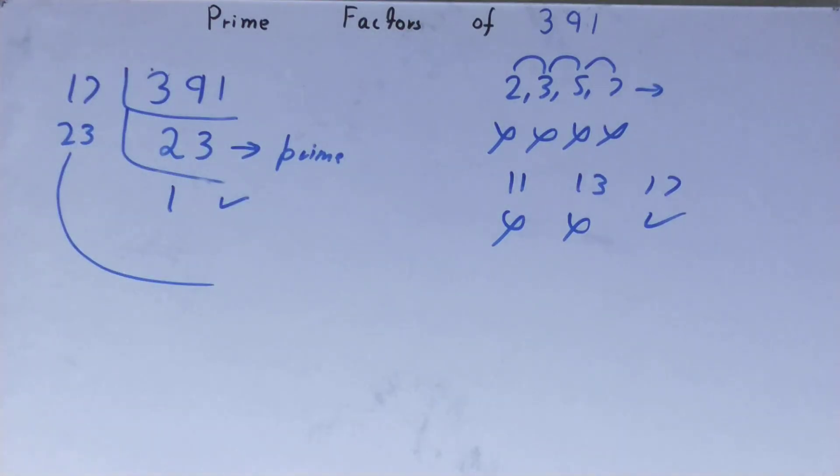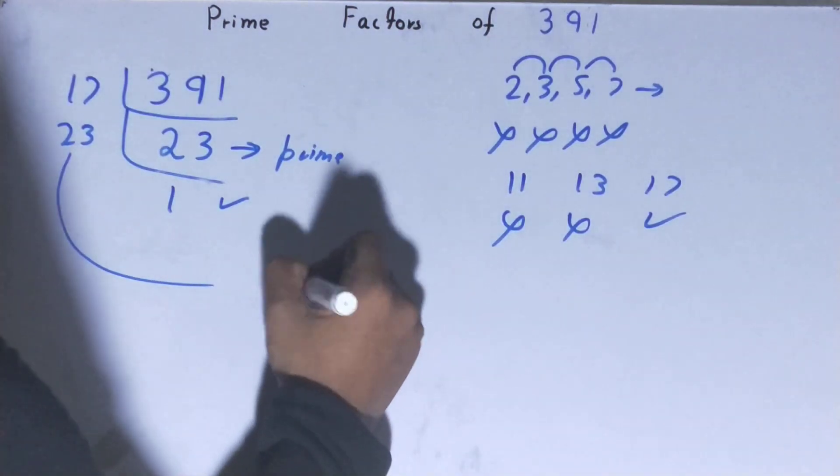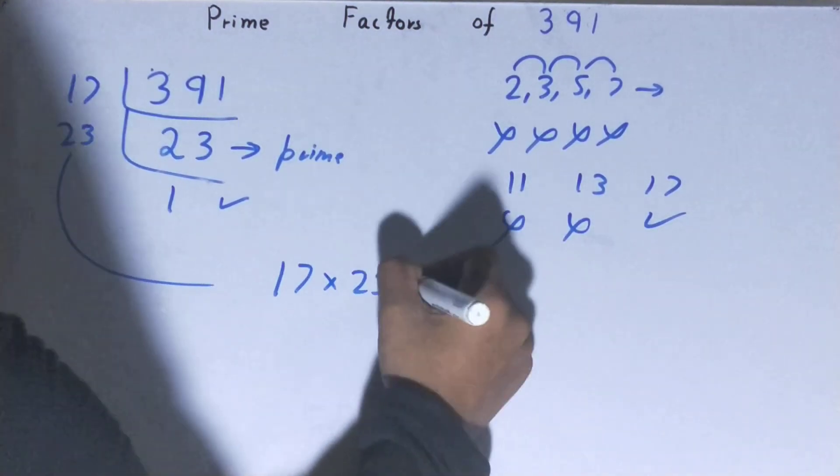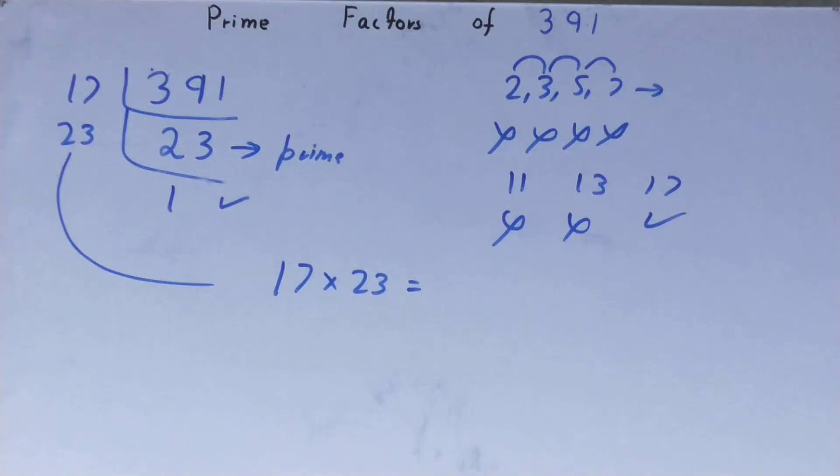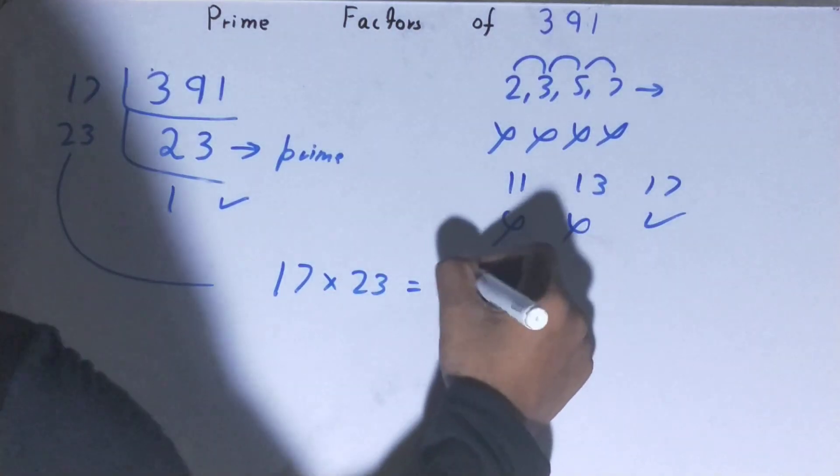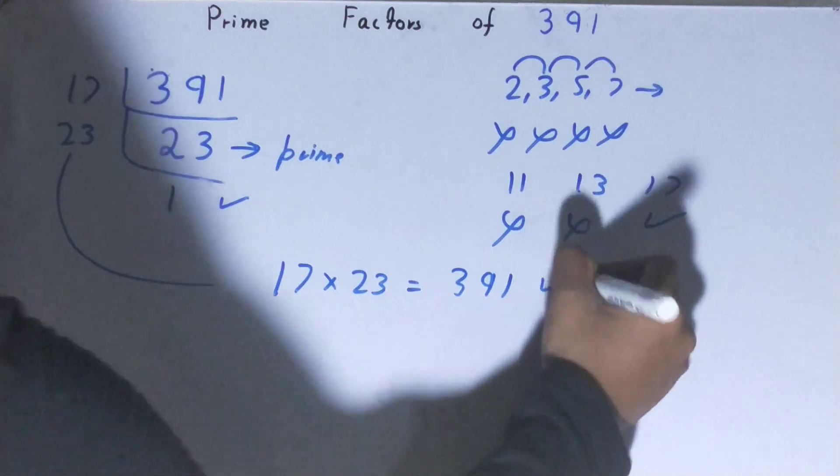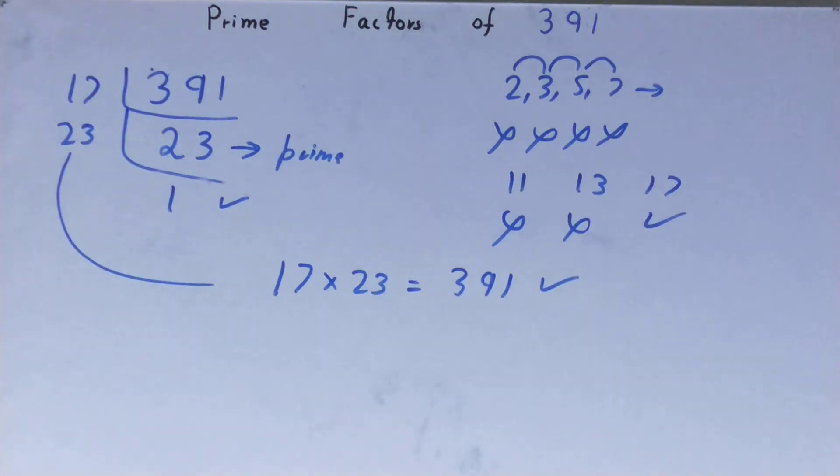Whatever you have on the left-hand side will be the prime factors of the number 391, that is 17 times 23. If you want to check whether it is right or not, you can multiply them, and if on multiplying you have the number back again, that means your calculation is correct.